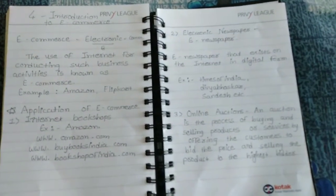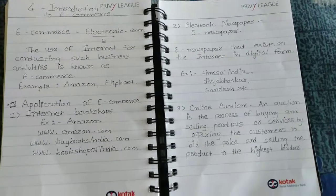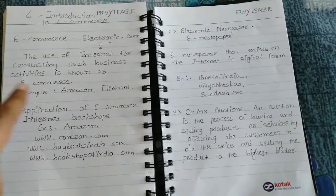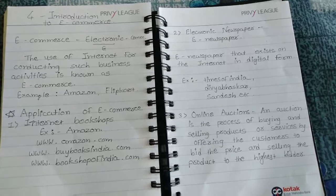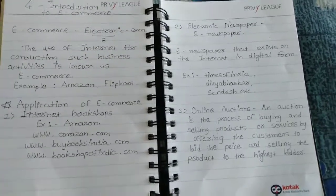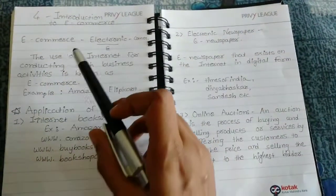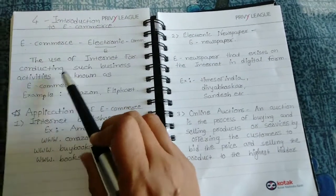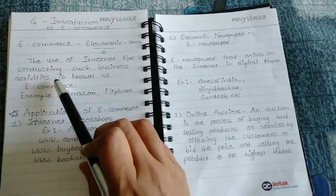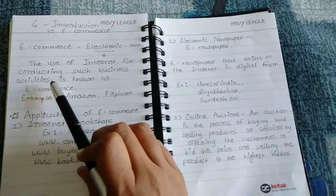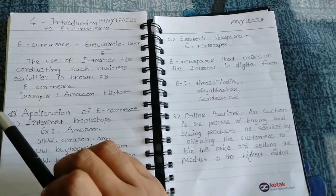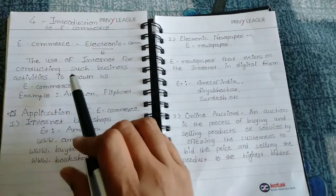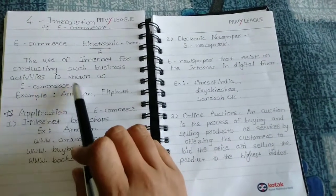E-commerce means what? The definition of e-commerce: the use of internet for conducting such business activities is known as e-commerce. If you are doing your business online, if you are doing your business activity by using internet, then it is known as e-commerce.